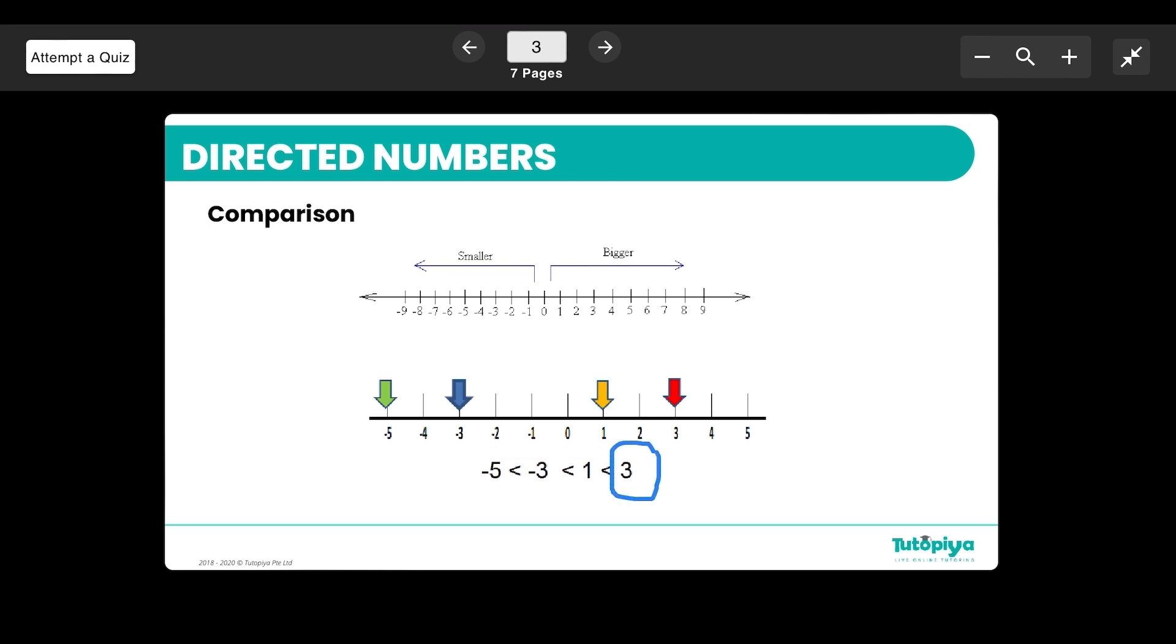For example, positive 3 is greater than positive 1, so 3 is bigger than 1 in normal terms. But in the negative case, although negative 3 you might think of it as a smaller term, it's actually bigger than negative 5. So negative numbers, the bigger they get the smaller they are. Positive numbers, the bigger they get the larger they are. That's what we're looking at.